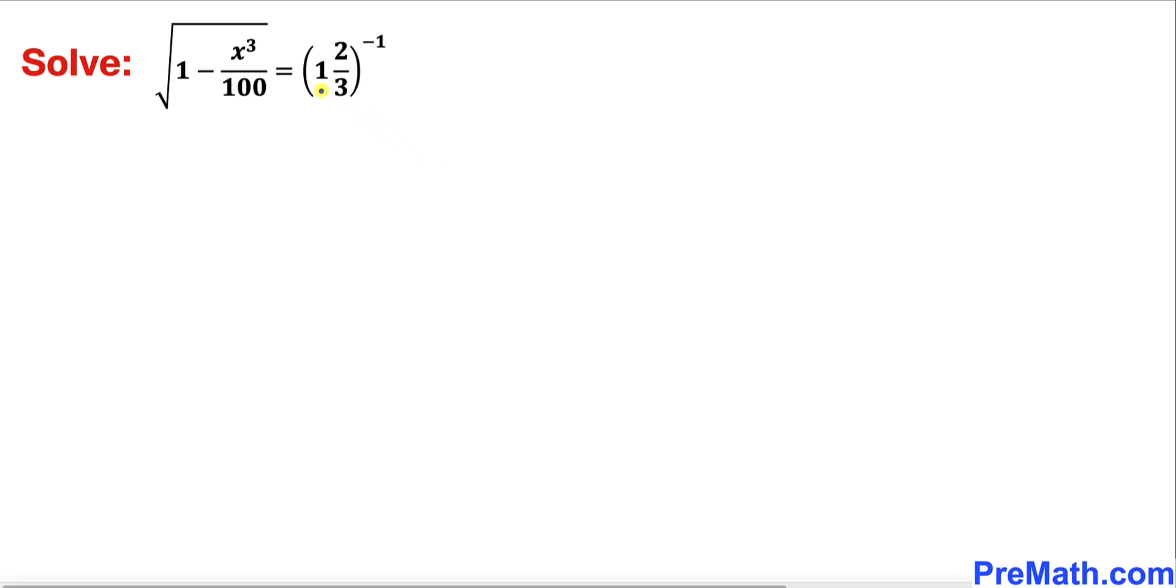Welcome to PreMath. In this video we are going to solve this given equation: square root of 1 minus x cubed divided by 100 equals 1 and two-thirds to the power of negative 1.